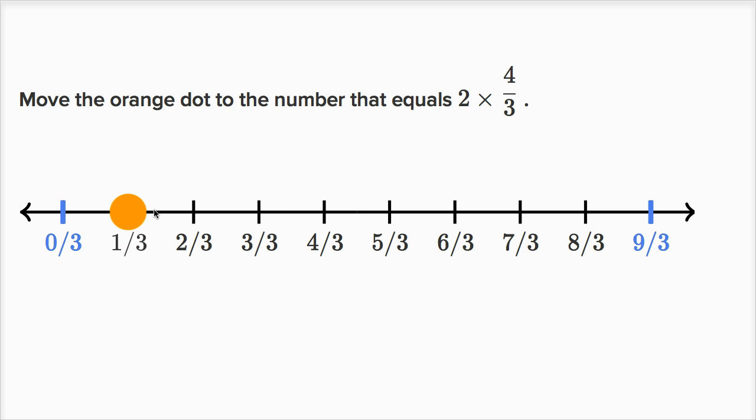So one times four-thirds is just gonna get us to four-thirds, and then if we have another four-thirds, we're gonna add four-thirds to that, so we're gonna move another four-thirds to the right. So four-thirds plus four-thirds would get us to eight-thirds.